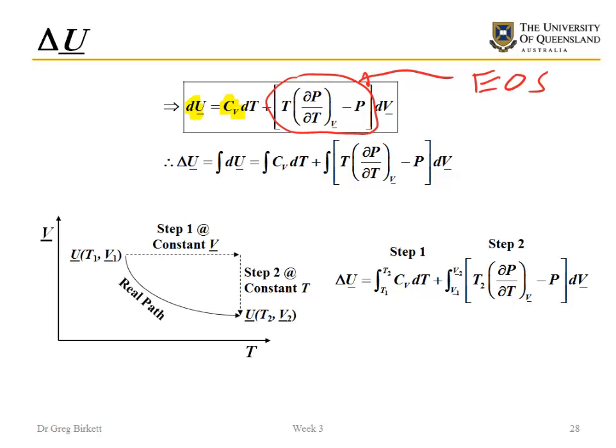Because we've got a temperature term and then a volume term we can do our change in steps. If we've got U at T1, V1, we can do a step at constant V where the temperature changes and then a step at constant temperature where just the volume changes. Step one is just the temperature change which is integrated from T1 to T2, and then step two is integrated from V1 to V2. These terms are always integrated, so if you're doing a change and you've got a function then you're always integrating things.